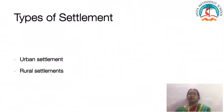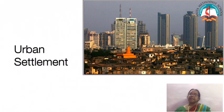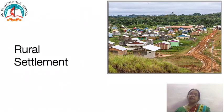That is the difference between urban and rural settlement. Urban settlements involve industries, trade, and banking; rural settlements involve agriculture, lumbering, fishing, and mining. Rural settlements have a small population with low population density, and urban settlements have a high population with high population density.